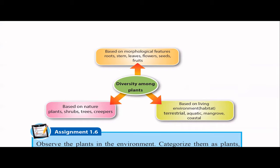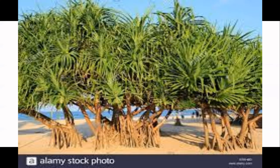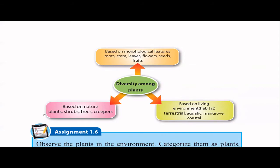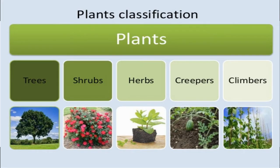Then come mangroves, which are found in lagoon areas and have a different type of root system. Coastal plants, like coconut trees, have coastal environmental features. Based on the nature of the plant, some are very small plants, some are shrubs or bushes, and some are large trees like mango, coconut, and guava. Creepers, like passion fruit, do not have a strong stem and always need a support. So we can see many differences among plants.